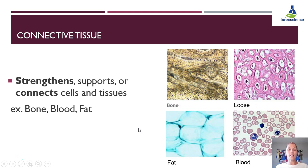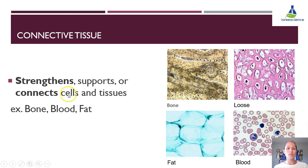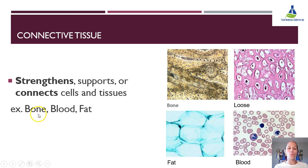Let's start with connective tissue. Connective tissue has a wide variety of different types of tissue that fall into this category, so it has a lot of jobs or functions. Its main jobs are to strengthen, support, or connect cells and different tissues to each other. Some of the main examples include bone, blood, and fat.